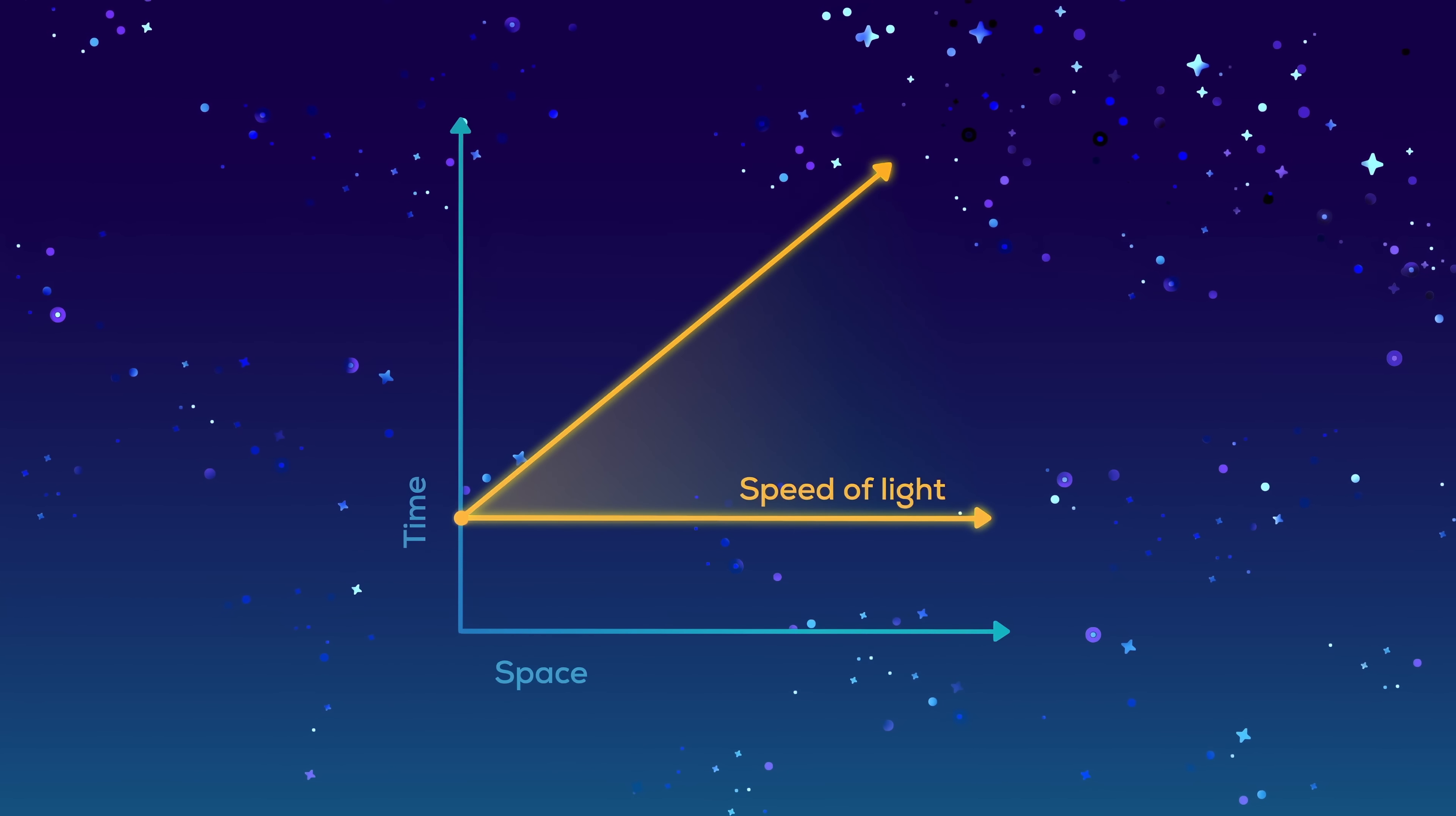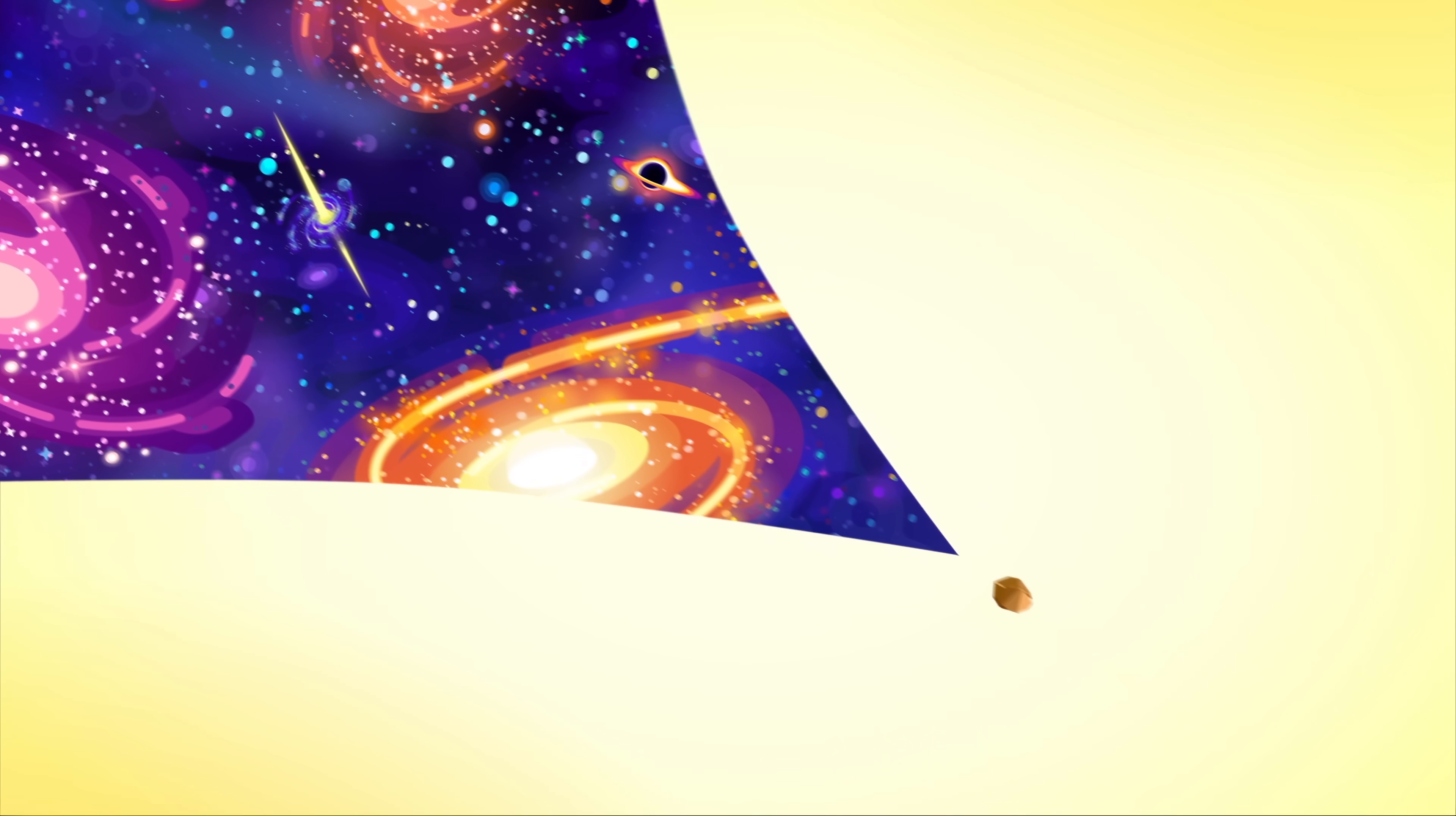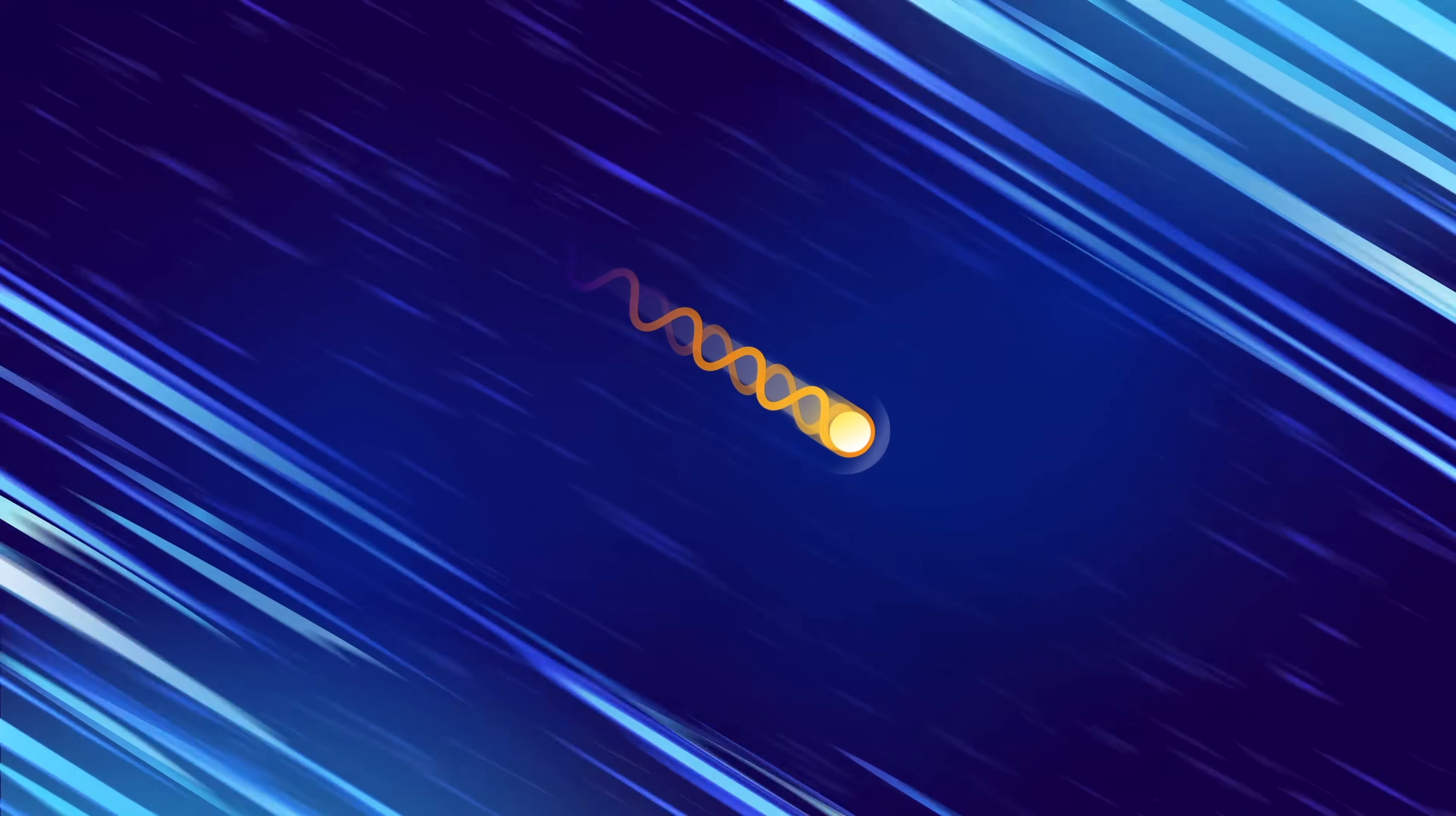Unfortunately, the theory of relativity specifically forbids anything that starts out traveling slower than the speed of light to reach the speed of light. Because moving faster through space requires energy, and the energy required to reach the speed of light is literally infinite. Even if you could gather all the energy of the universe, you couldn't accelerate a grain of sand to the speed of light. You can get as close as you like, but you can never reach it. It is possible to move at the speed of light as photons do, but they always move at the speed of light.